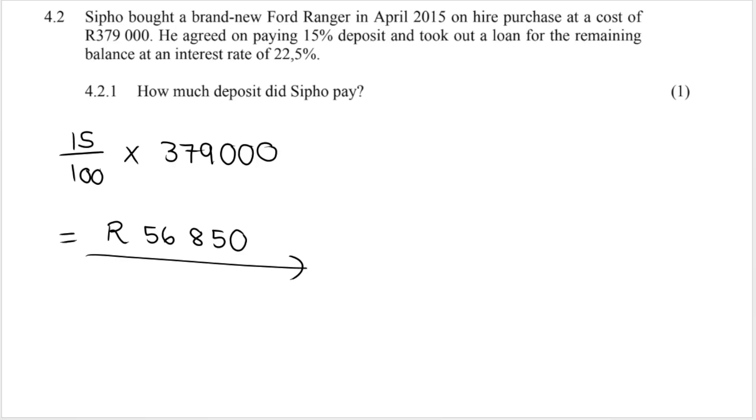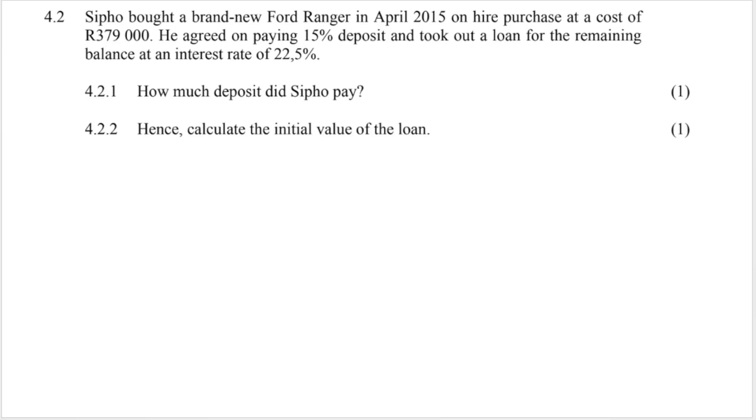So that is the amount required for him to pay on the day before he can drive away in his car and the leftover, the balance, will be paid over a period of time. They say hence calculate the initial value of the loan. Remember the loan again is the leftover amount after you remove the balance. So you take the initial price that the car cost minus what we just paid for my deposit and what we get that is the balance that is the value of the loan.